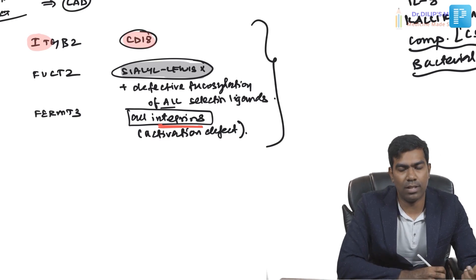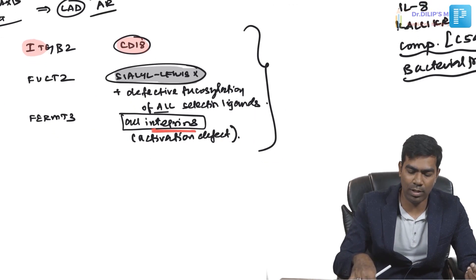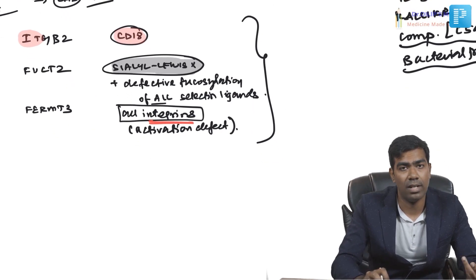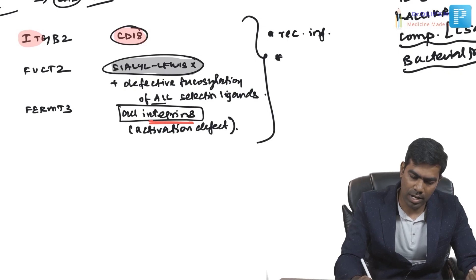All three LAD types are autosomal recessive in inheritance. The general features include recurrent infections, especially bacterial and fungal, since neutrophils are critical for fighting bacterial and fungal infections. Patients will also not have any pus formation, because neutrophils cannot migrate to the site of infection.